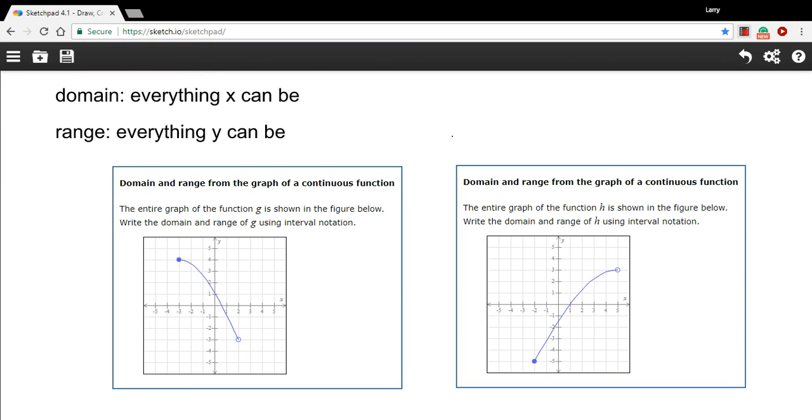In these problems, we need to find the domain and range from a graph of a continuous function. What's a continuous function? Well, that just means that for the length of the function, however long it's defined, it's just one smooth line. It doesn't have any breaks or jumps in it, and what that means